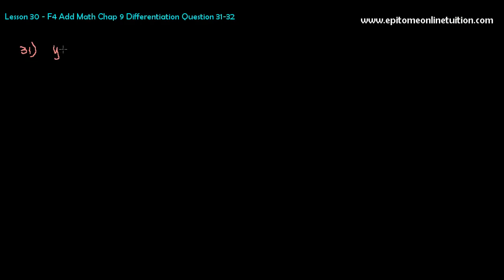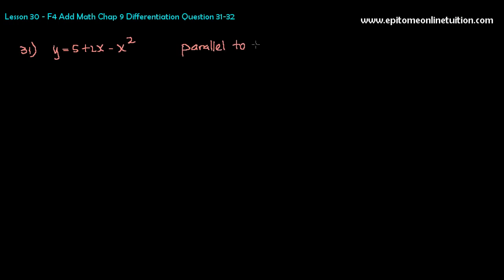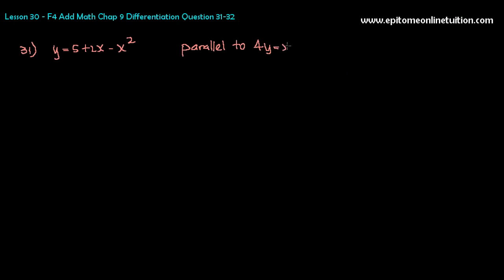Let us do question number 31. Find the equation of the normal to the curve y is equal to 5 plus 2x minus x squared. You have a curve, and you're looking for the equation of the normal. It says that the equation of the normal is parallel to the line 4y equals to x plus 8.